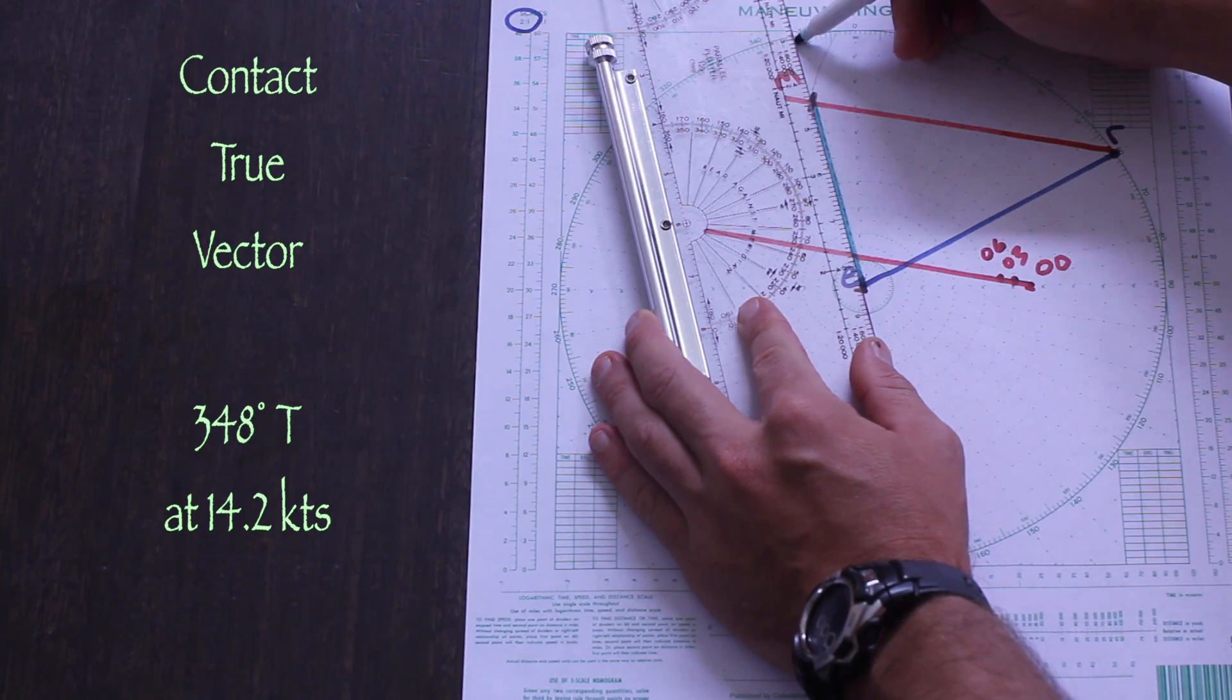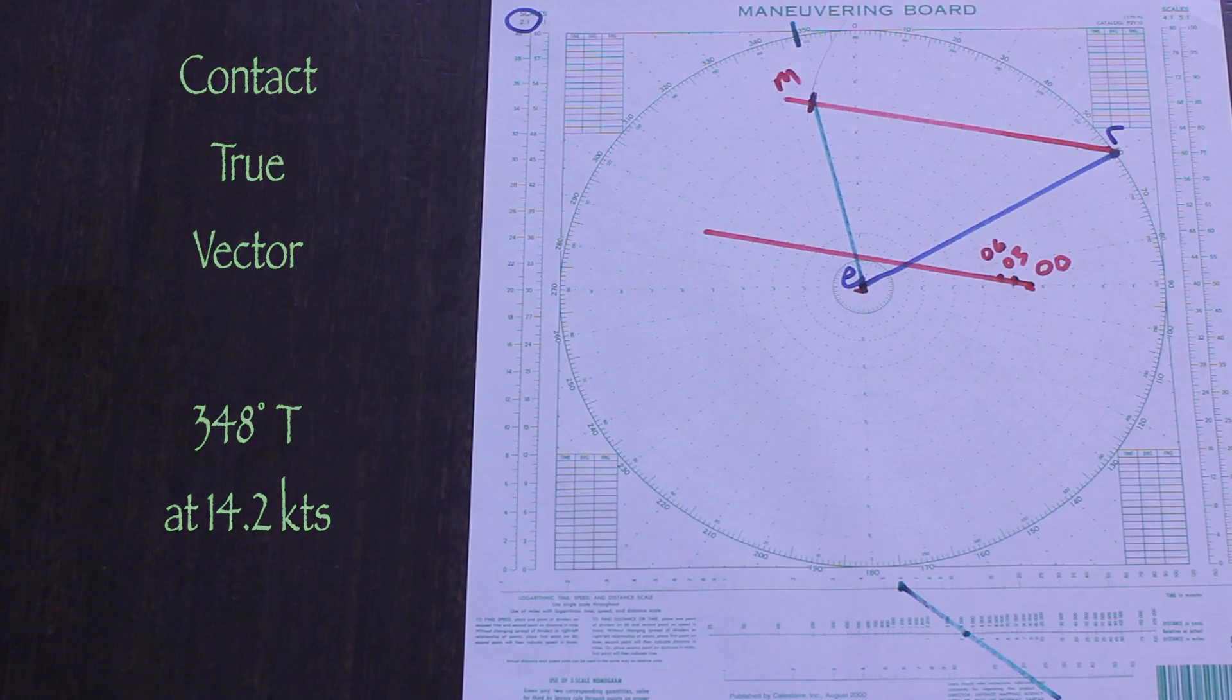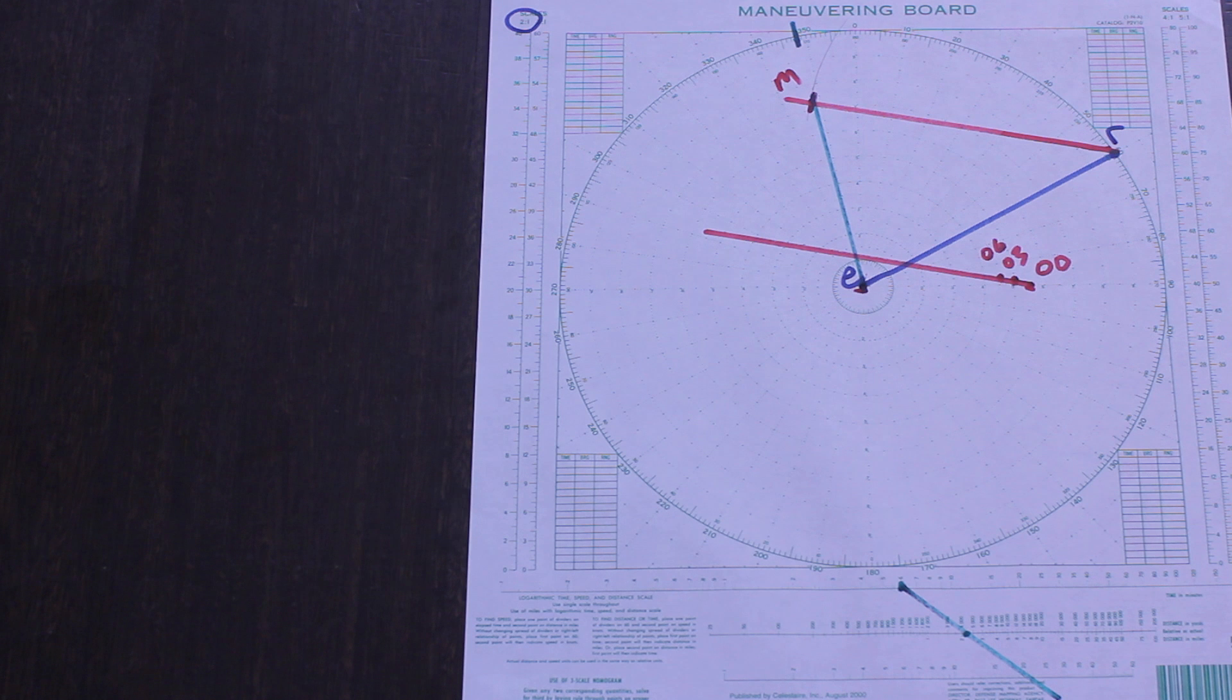Hopefully you can see that this contact will pass ahead of you at slightly over 2 miles, so there is not any risk of collision. If your standing orders are different, and both ships are power-driven vessels inside of one another, you would be in a crossing situation, and you would be the giveaway vessel.